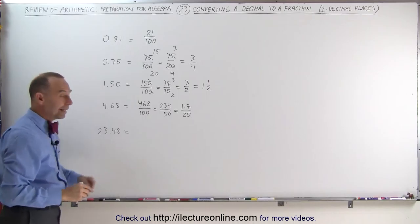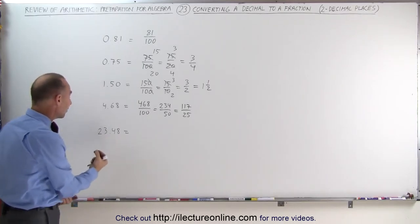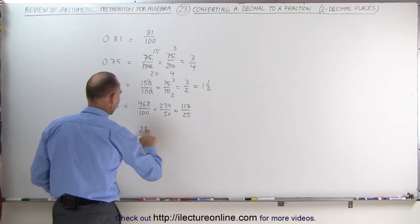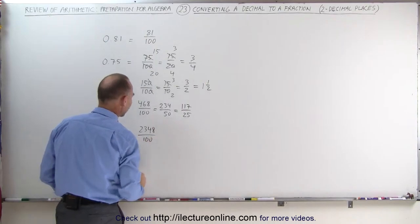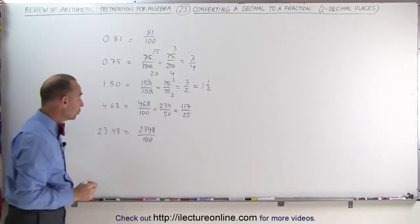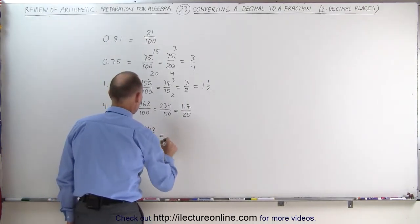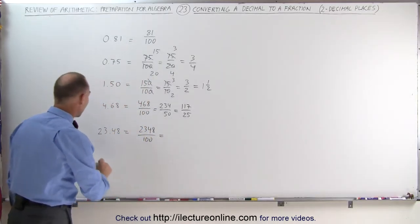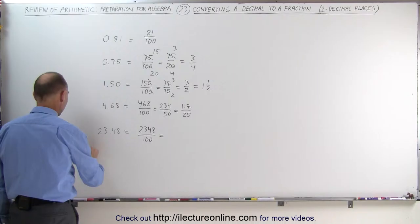23.48, again the same thing. We remove the decimal place and divide by 100. Notice that they're both even. We can divide by 2. This will give us, well, that's a little bit more difficult, isn't it? 2,348 divided by 2. Well, we can do it with long division. 2,348 divided by 2.